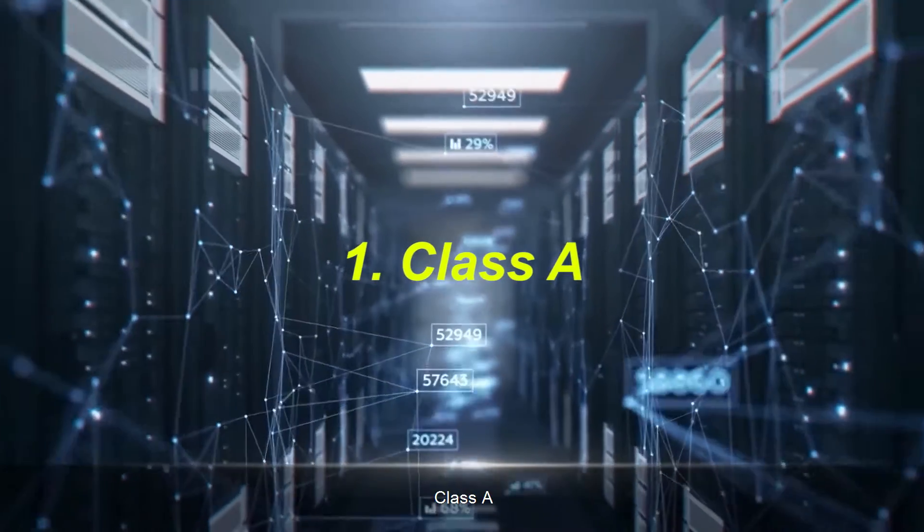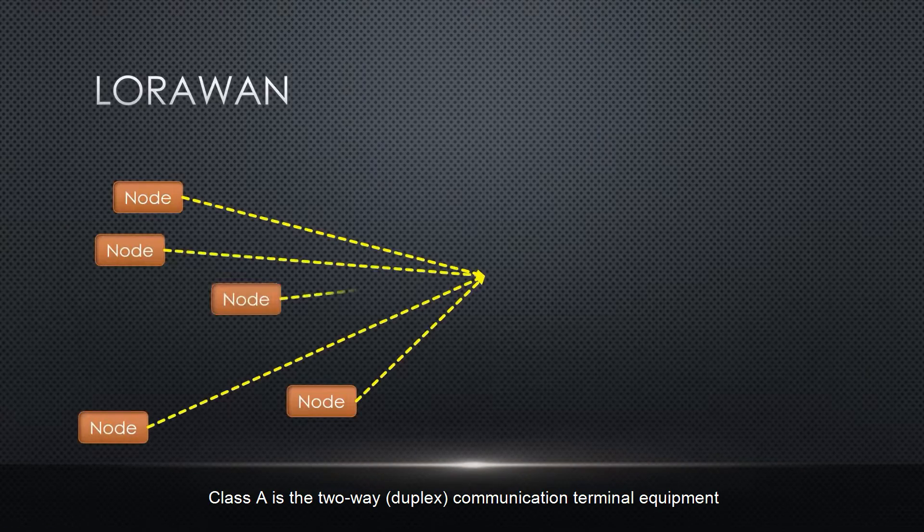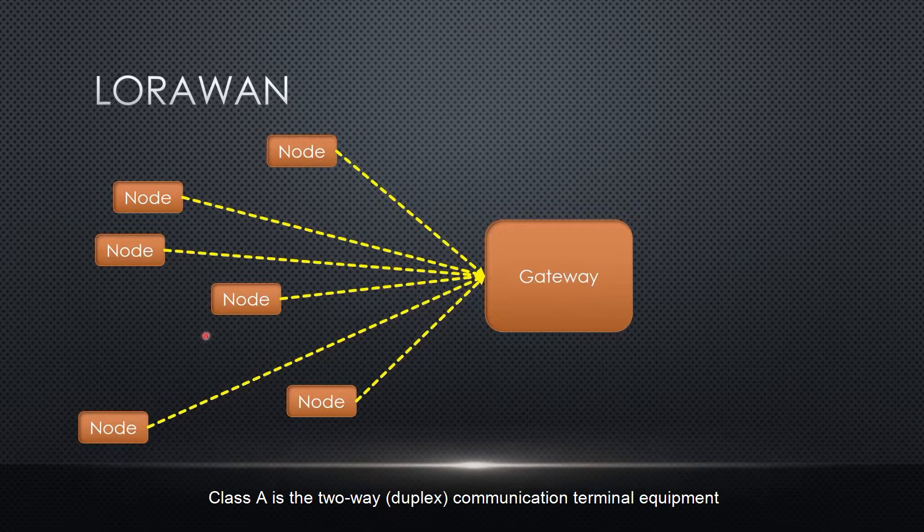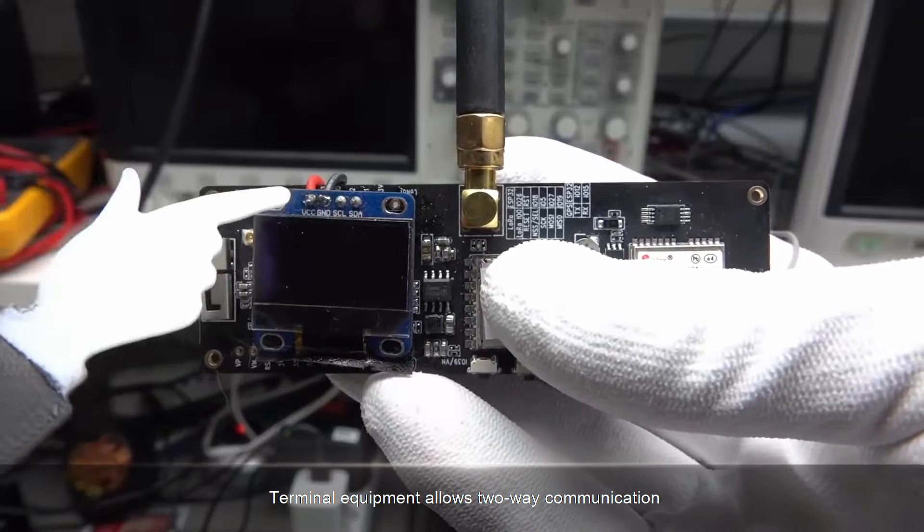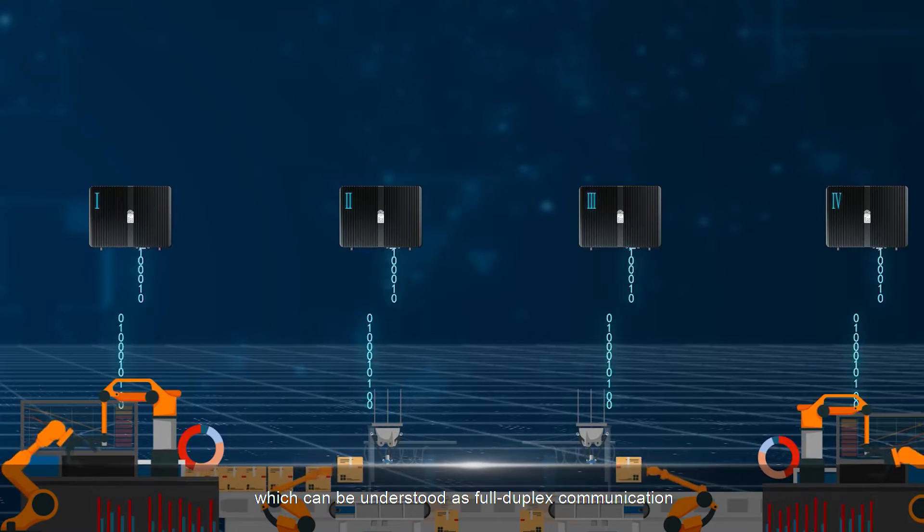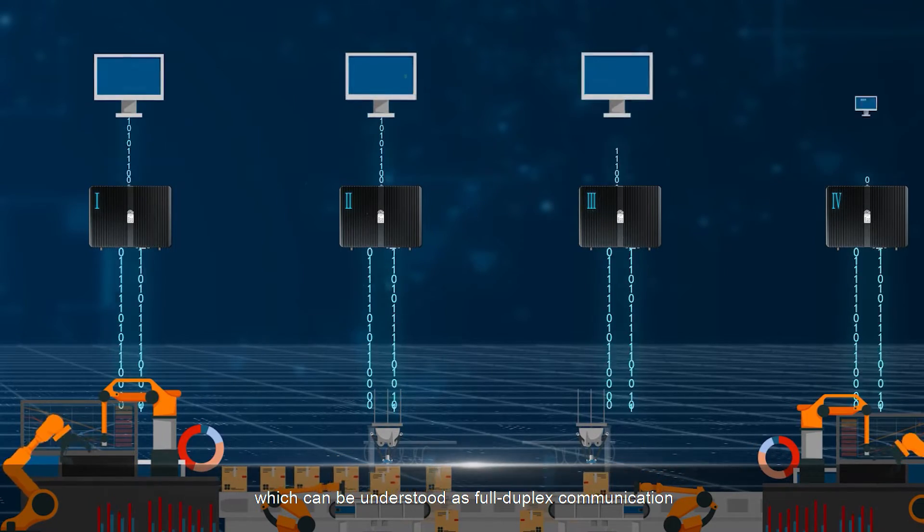Class A is the two-way duplex communication terminal equipment. Terminal equipment allows two-way communication, which can be understood as full-duplex communication.